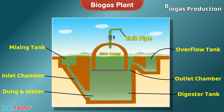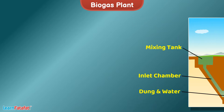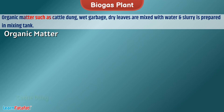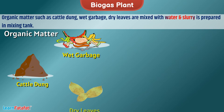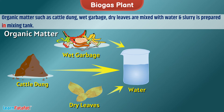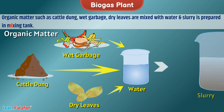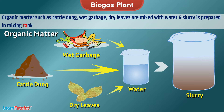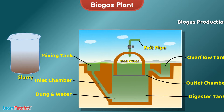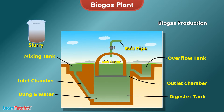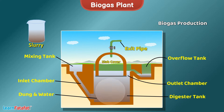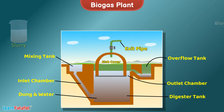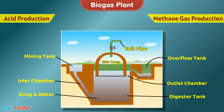For production of biogas, organic matter such as cattle dung, wet garbage, and dry leaves are mixed with water and a slurry is prepared in a mixing tank. Through the inlet chamber, the slurry is fed into the digester tank where the actual process takes place in two steps.